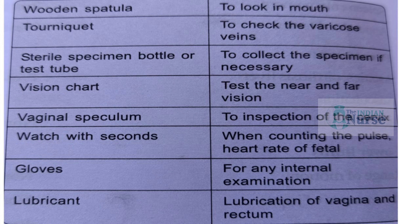Vaginal speculum — for inspection of the cervix. Watch with seconds — for counting pulse and fetal heart rate. Gloves — for any internal examination. Lubricant — for lubrication of the vagina and rectum. These were the articles needed for a physical examination.